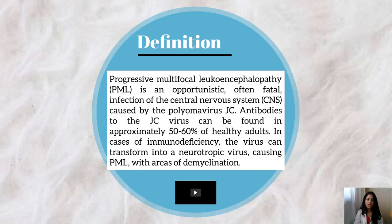Antibodies to the JC virus can be found in approximately 50 to 60 percent of healthy adults. In cases of immunodeficiency, the virus can transform into a neurotropic virus causing PML with areas of demyelination.